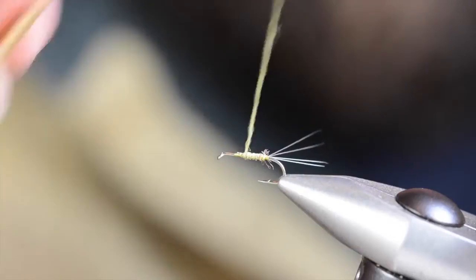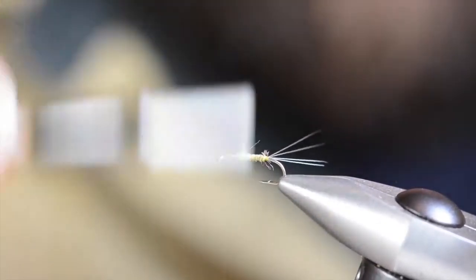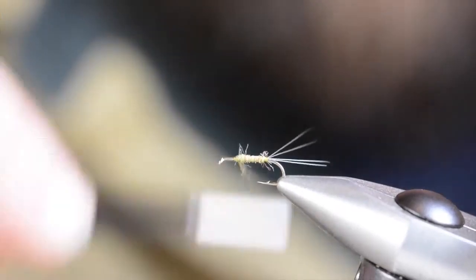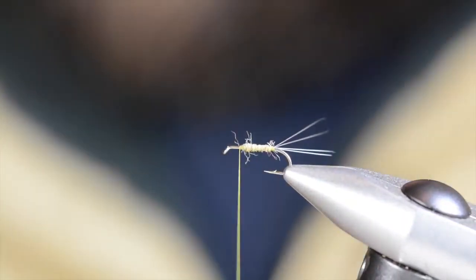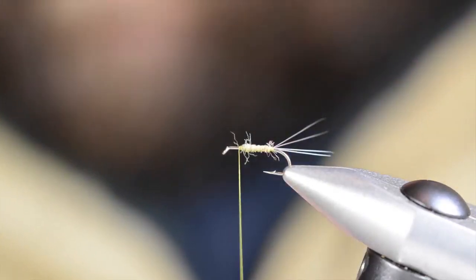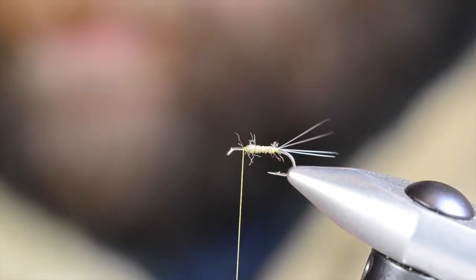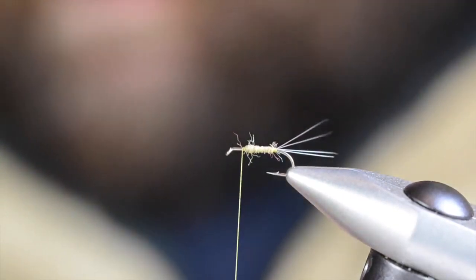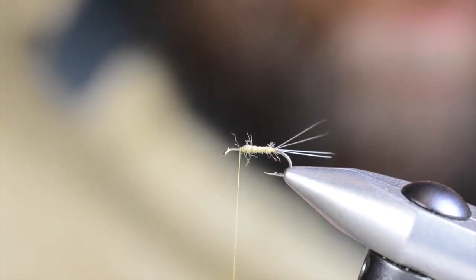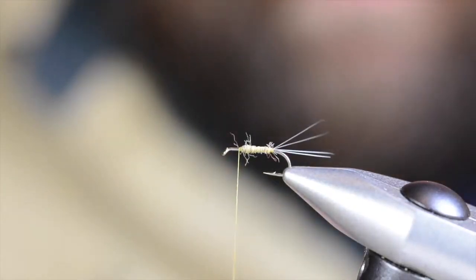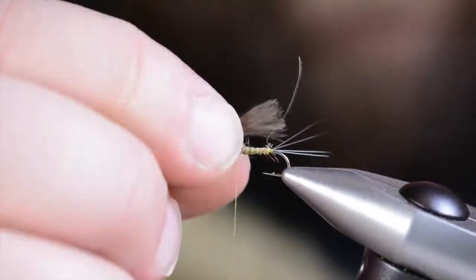So notice again I'm using very sparse dubbing. I'll just build this up a little bit. The point just before I put the wing in, I'm going to select a couple pieces of CDC here, might even do three. You can have a pretty decent sized wing on here. Line the tips up.